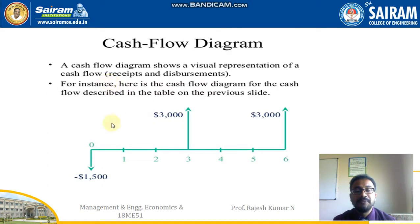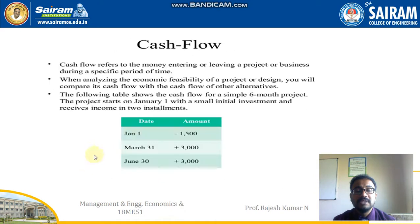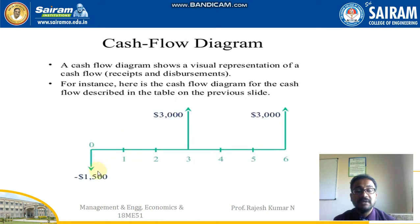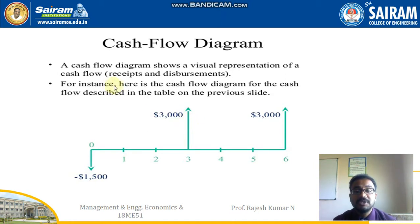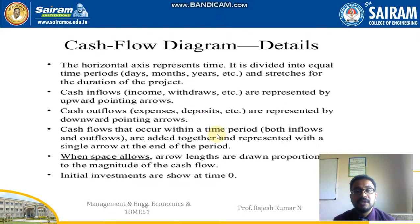You can see this cash flow diagram and how to draw it. The duration starts from January. In January, I spent 1500 from my pocket, so the cash flow arrow is downwards. January, February, March, April, May, June — you can see this. In January I paid 1500 rupees, and in the months of March and June I got the return payment of 3000. Since it is a return payment, a benefit I am receiving, the arrow mark is in the upper direction. A cash flow diagram shows a visual representation of your cash flow receipts and disbursements.